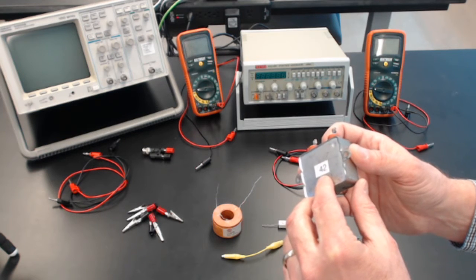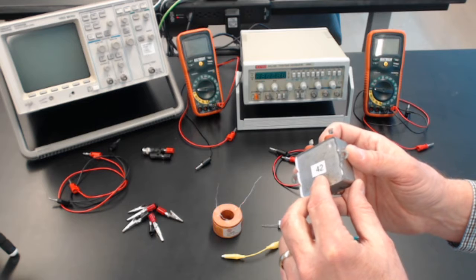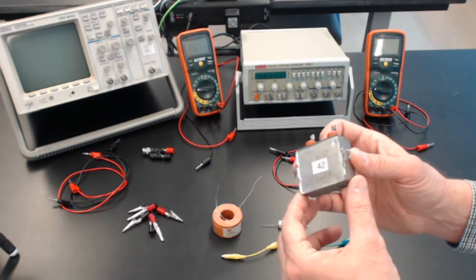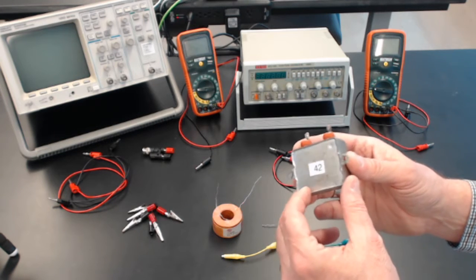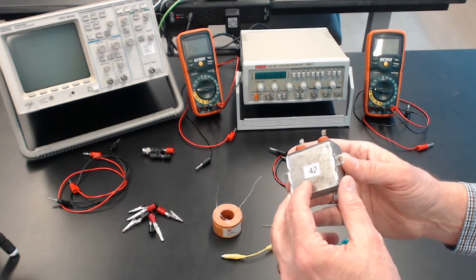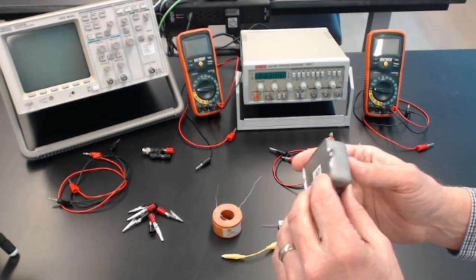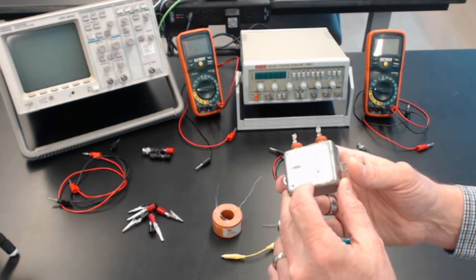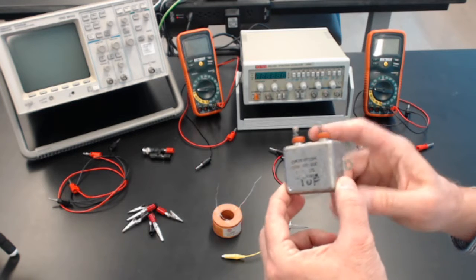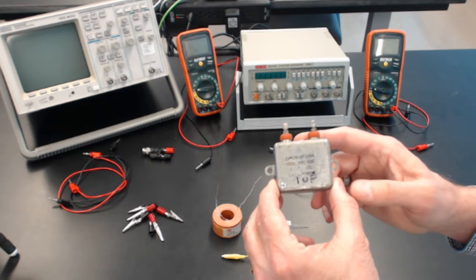And if we were doing this experiment in class, I would have had each of you go and get the capacitor that you've used in the capacitors lab. Since we can't do that, I'm going to suggest that you instead go to your notebooks and use the value that you measured for that capacitor, as long as it's close to 1 microfarad, and use that as the value for the capacitance.